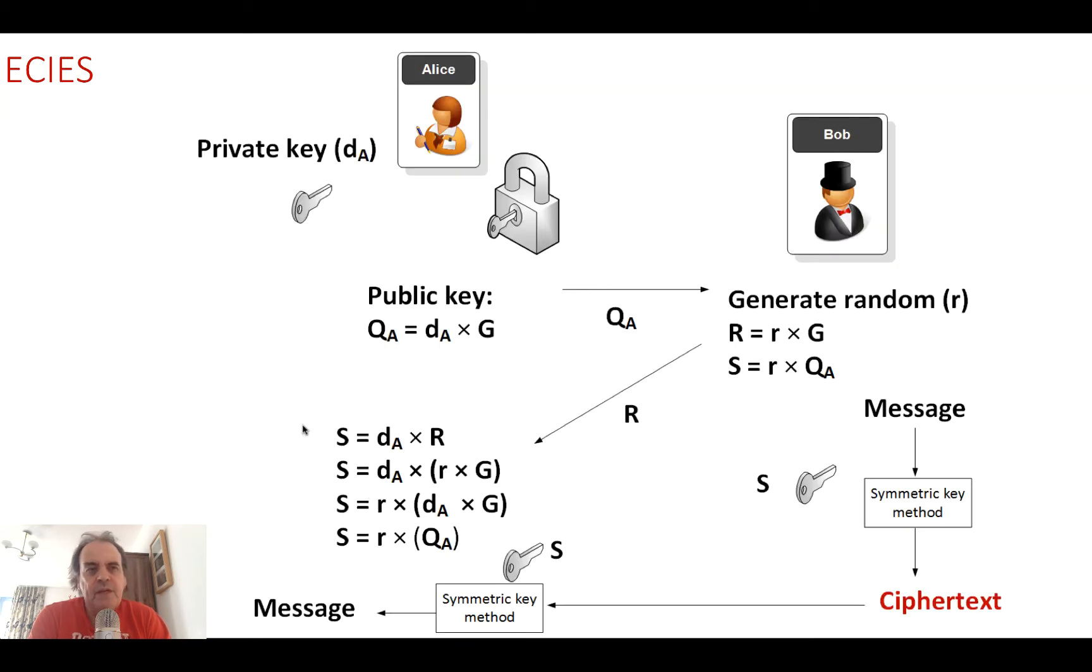The way that ECIES works is that we generate a symmetric key from the public key of the person that we're sending the data to. It differs from our key exchange methods where the same key would be generated on the other side. If Bob wants to send to Alice, Alice will send her public key, Bob will generate a symmetric key based on that, send some values back, and then only Alice will be able to decrypt the message.